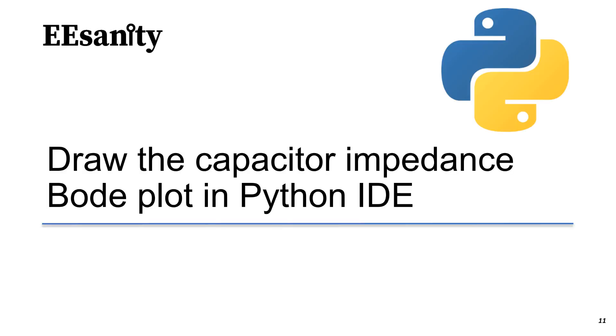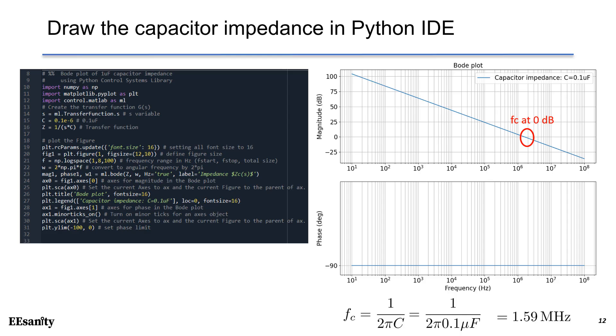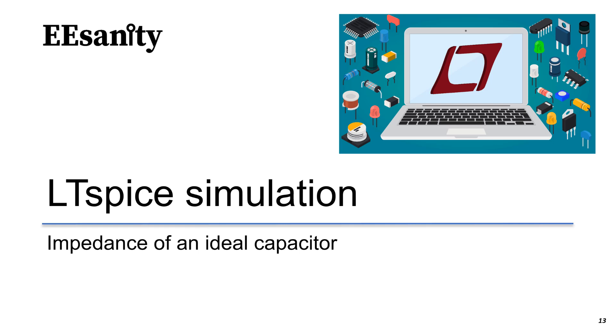In the following slides, I will show you how to draw capacitor impedance Bode plot using Python. On the left hand side, we have the Python code. First, you need to install the Python control system library in your PC. After that, you can simply run this code to import the control module and use function of Bode plot to draw the impedance. On the right hand side, we can see this is the impedance we have found in the previous slides. We see the crossover frequency at 0 dB about 1.59 megahertz. In addition to Python, we have LTSpice to run AC analysis.